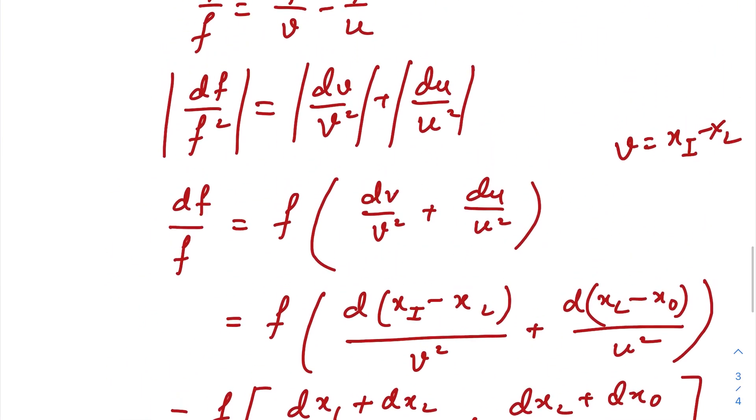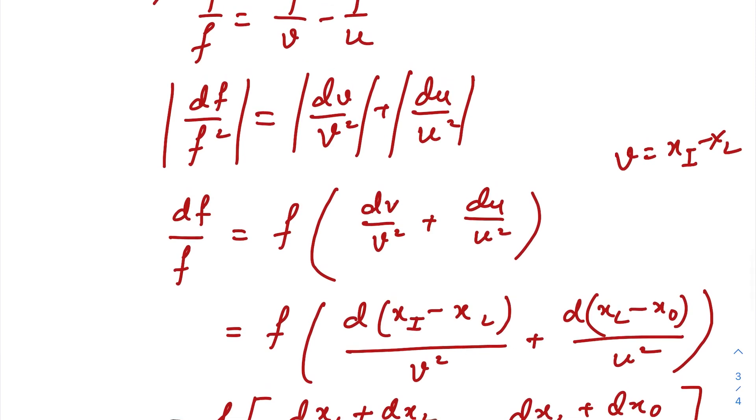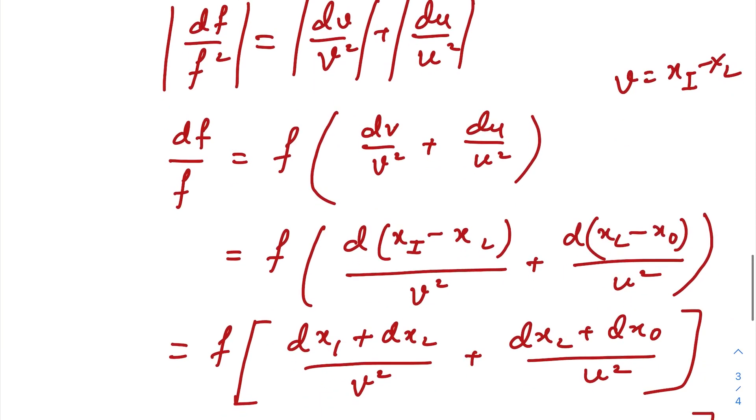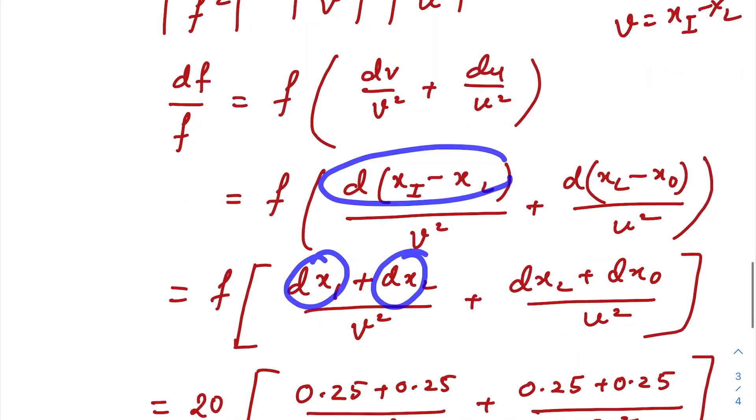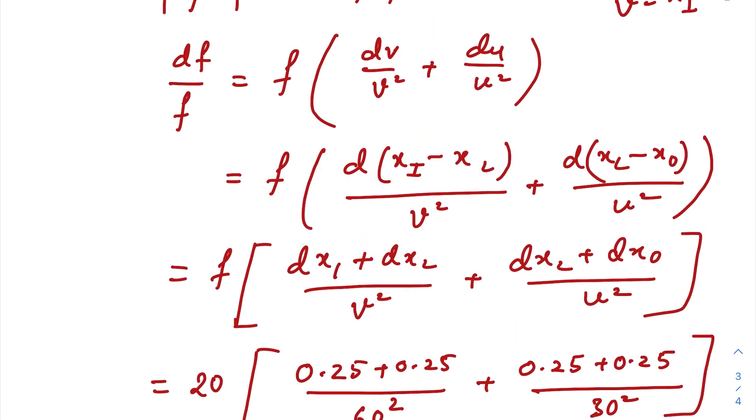Just remember one thing: while calculating percentage error, please write down all the fundamental formulas. Start from the very fundamental formulas, because people make mistakes in these types of questions. Initially when I was trying to solve it, I was writing dv as 0.25 and I was always getting the wrong answer. But later I thought that of course, for measuring v we need to take two separate readings, so there should be a double error, that is 0.25 and 0.25.